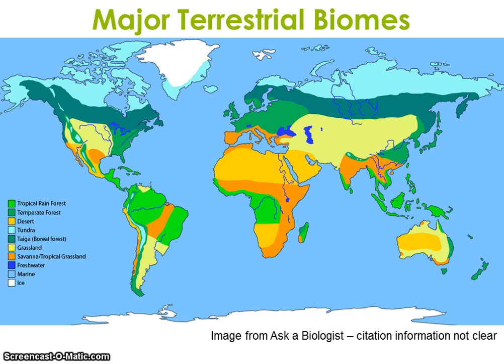Biogeography is the study of the spatial or geographical distribution of organisms, both past and present. Biogeography works to describe and understand the processes responsible for patterns in the distribution of species and larger taxonomic groups. More specifically, historical biogeography studies the origin, dispersal, and extinction of groups, whereas ecological biogeography addresses the distribution of contemporary organisms.